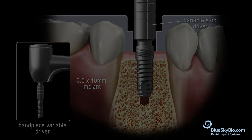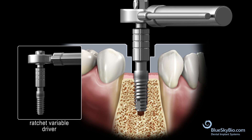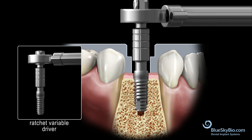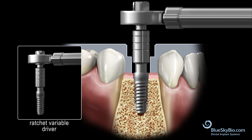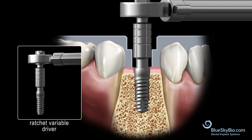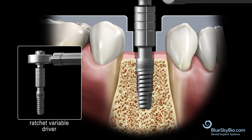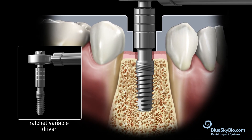Most of the time the bone will be dense enough that the implant will stall out before completely seating. If it does not seat to the first mark, switch to the ratchet-driven driver and seat to the first mark. For these cases, we recommend that the guided ratchet driver be used to complete the placement. Do not exceed 70 newton centimeters of insertion force. Place until the first mark.